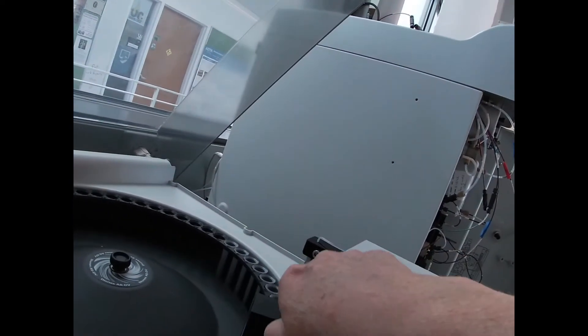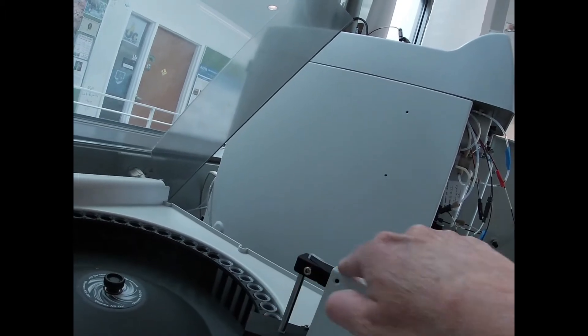So we have our autosampler. The autosampler can hold up to 50 samples. This plunger goes down and actually filters the sample right into here.